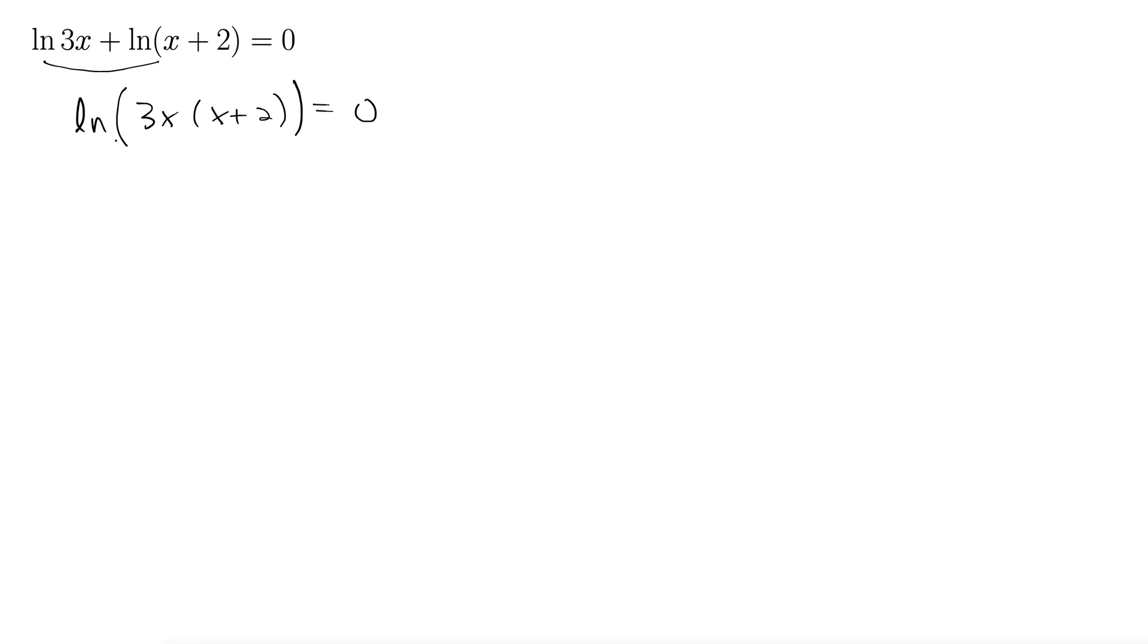Next, we convert this to exponential form. When we see natural log, it's really log base e. So we could think of this as log base e of all this stuff. Now to convert it to exponential form, we take our e, we go around to the exponent to the power of 0 and then back inside for the equals. So equals 3x times x plus 2.